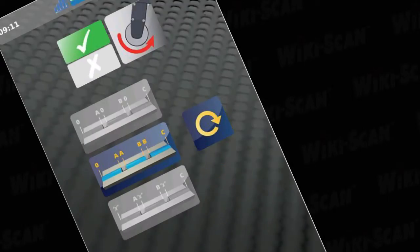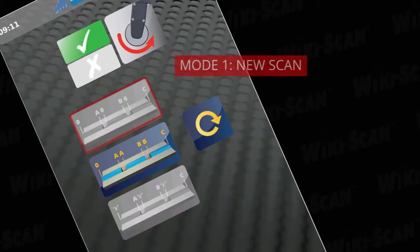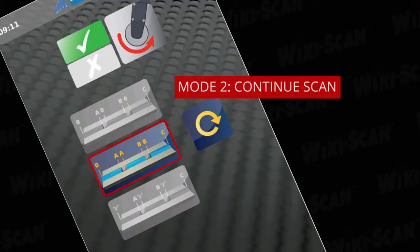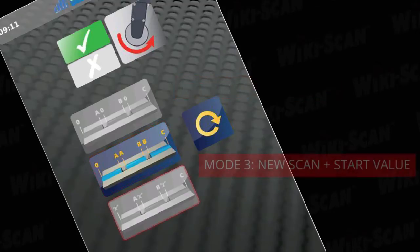There are three buttons for the three modes. Mode 1 at the top allows you to start a new scan without defining the starting value. Mode 2 in the middle allows you to continue a previously paused scan, and Mode 3 at the bottom allows you to start a new scan with a specified start value.